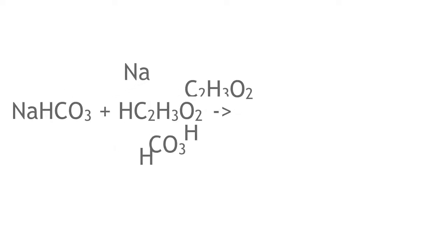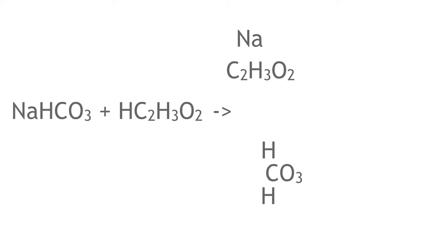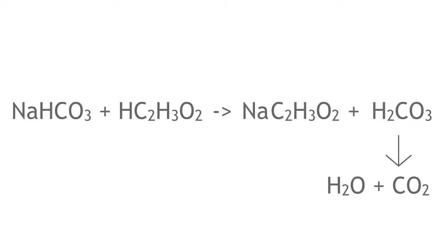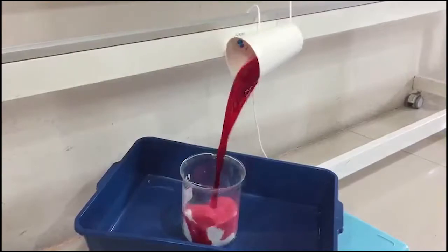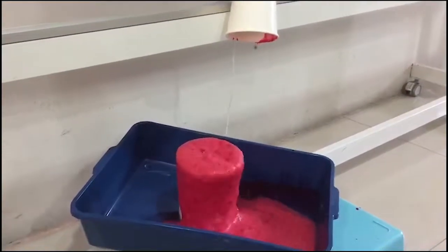When acetic acid is added to sodium bicarbonate, a double displacement reaction happens. Sodium ion replaces hydrogen ion, forming sodium acetate and carbonic acid, which will then decompose into water and carbon dioxide.